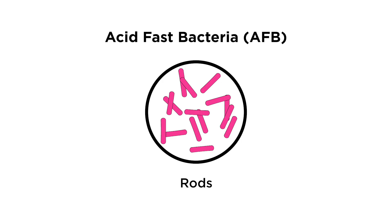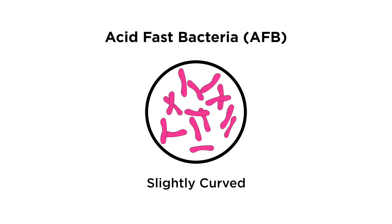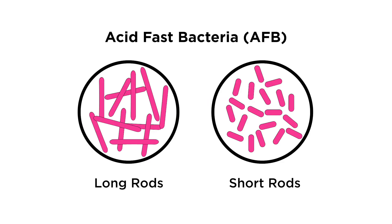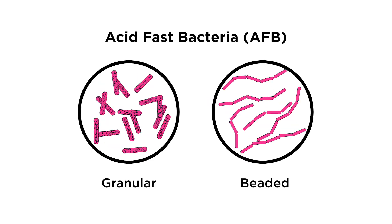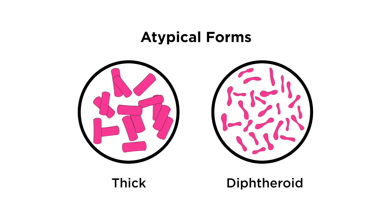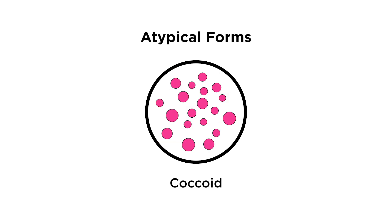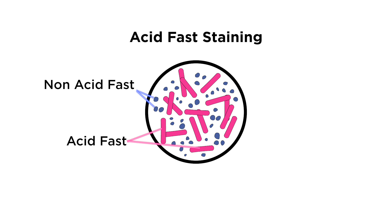The appearance of bright red stained bacteria that are slender, slightly curved, long or short rods, and sometimes granular or beaded, are typically acid-fast bacteria. Some atypical forms appear thick or diphtheroid or granular with an irregular stain, sometimes coccoid or very long. Non-acid-fast organisms will stain blue, or green when using brilliant green counter-stain, as will the background material.